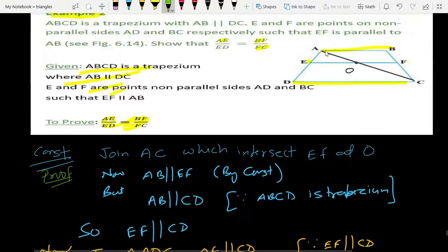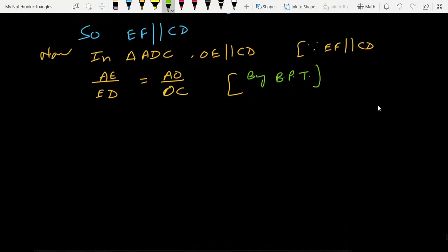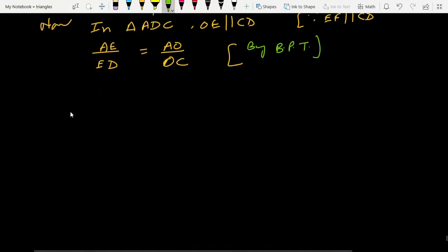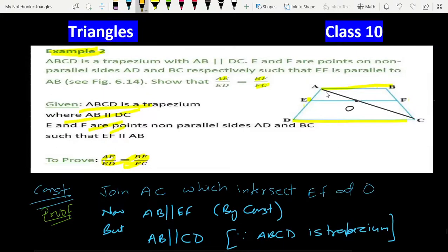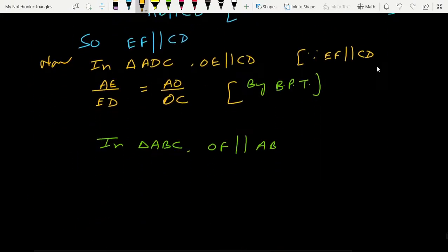Similarly in triangle ABC, OF parallel AB. BF upon FC equal to AO upon OC by BPT.